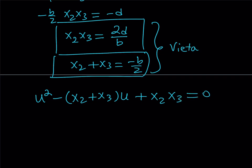Oops, I was going to write what it is and then replace it. Maybe let's go ahead and do that. So, this is supposed to be x2, x3. Now, let's go ahead and replace x2 plus x3 with negative b over 2. So, that's going to give me u squared plus b over 2u, right? Plus, x2x3 is going to be 2d over b, and the whole thing is equal to 0.